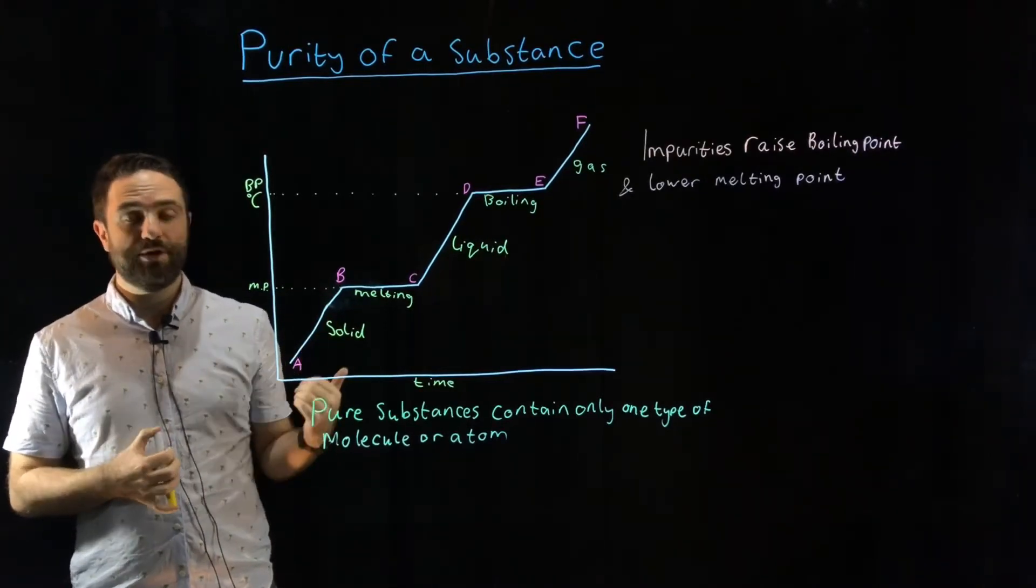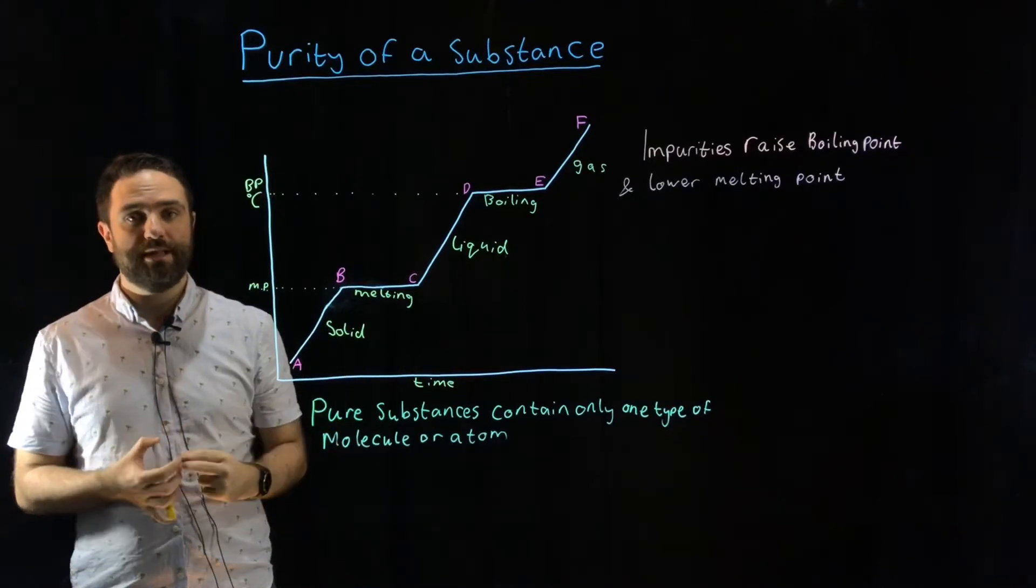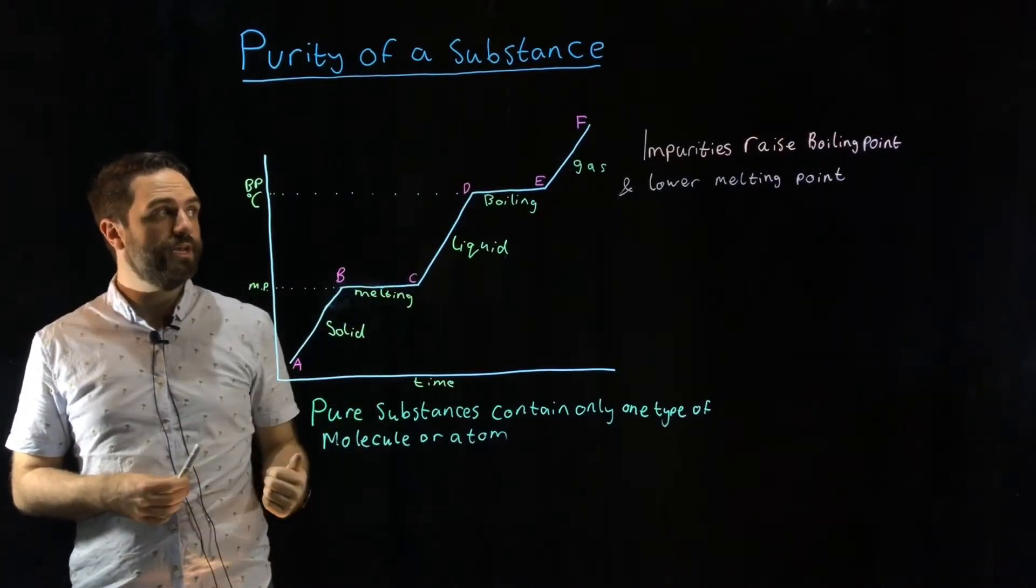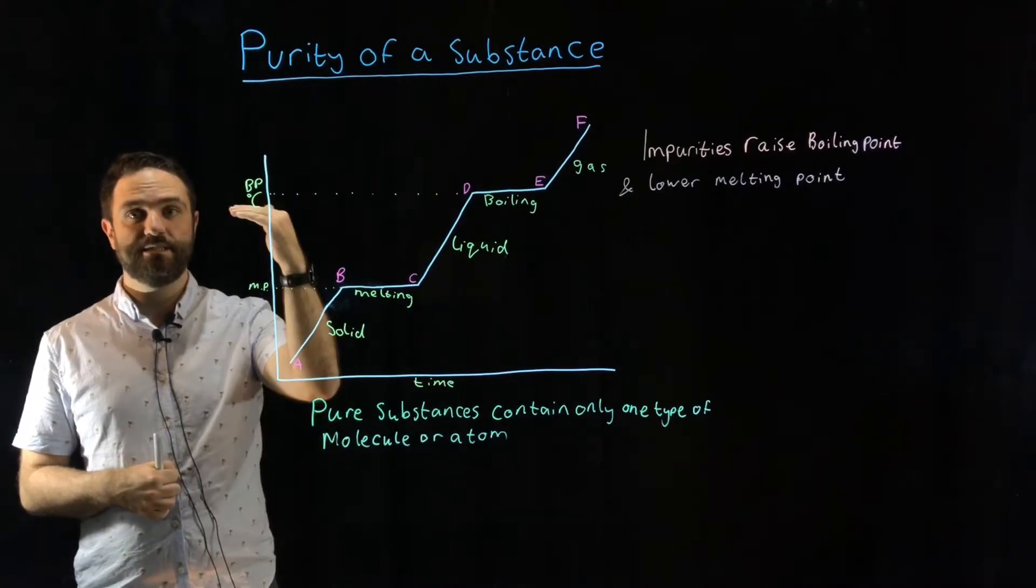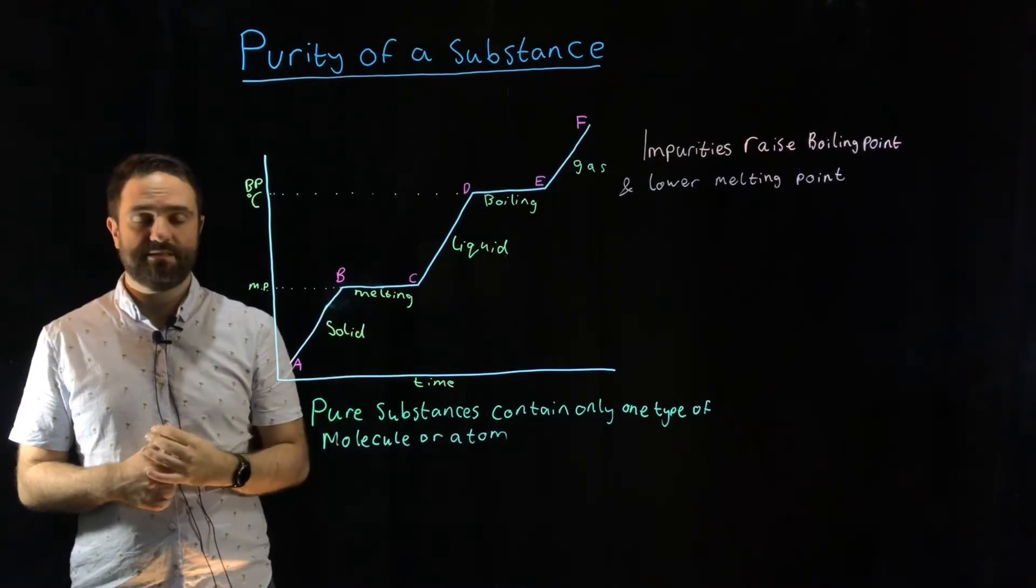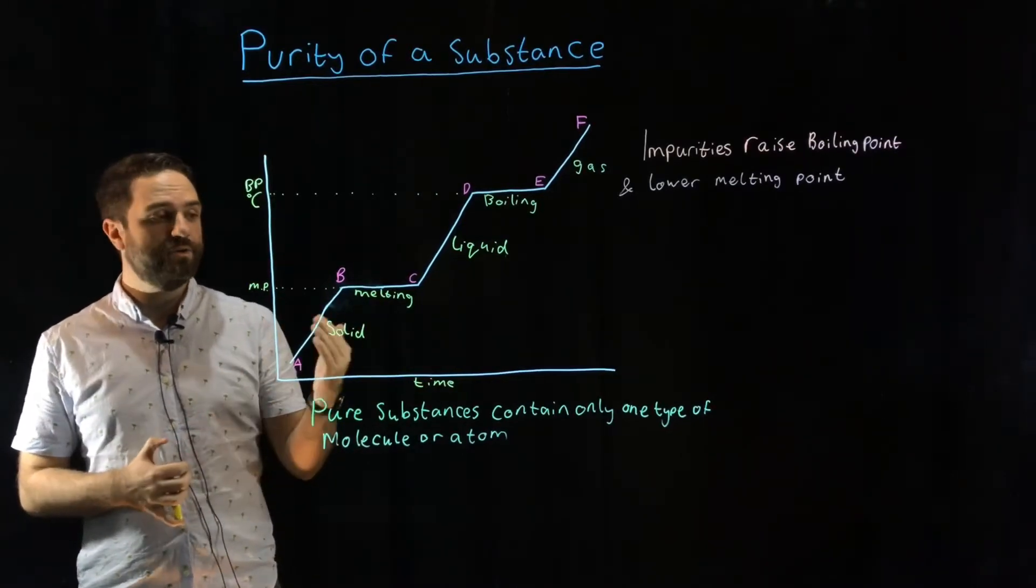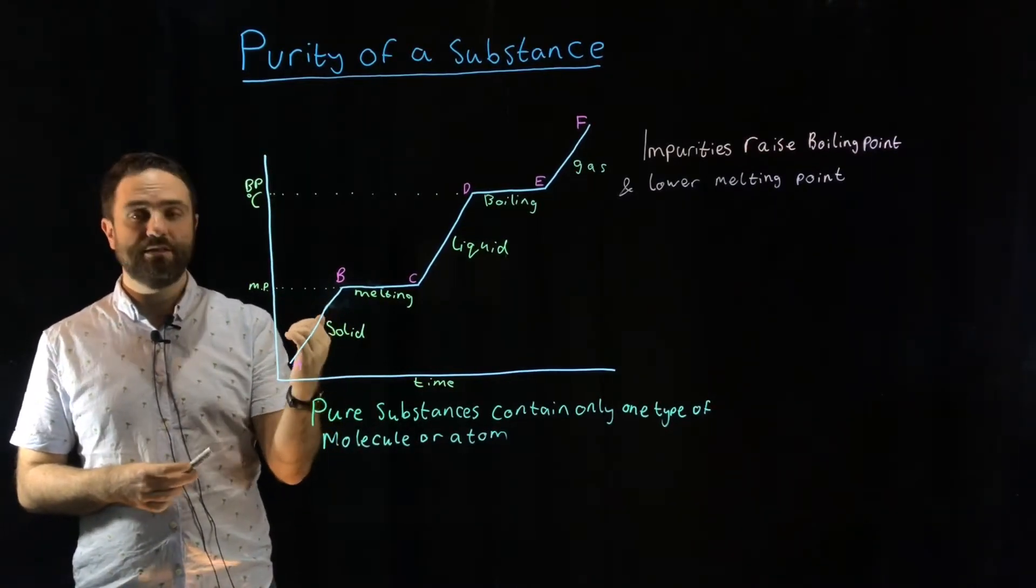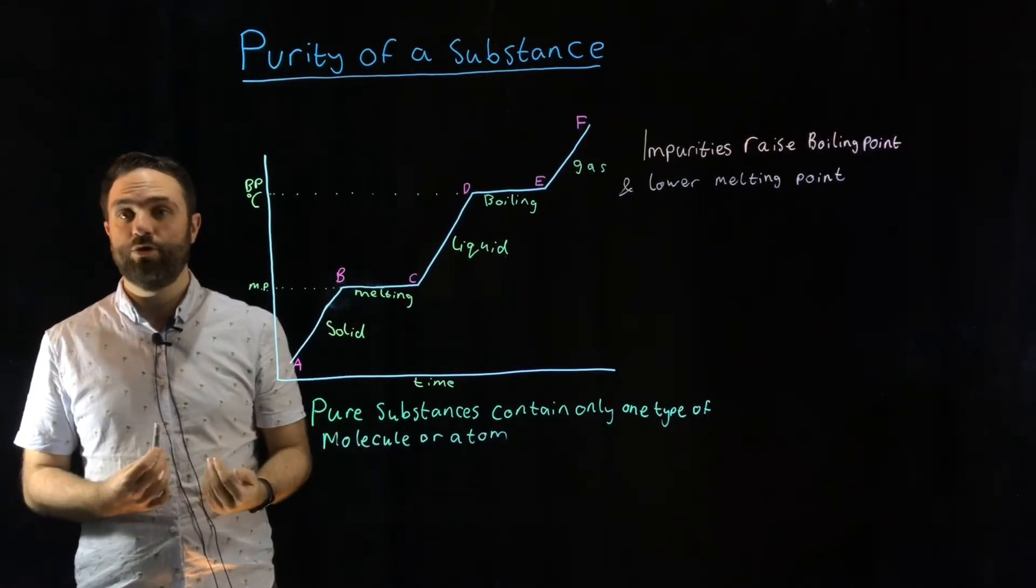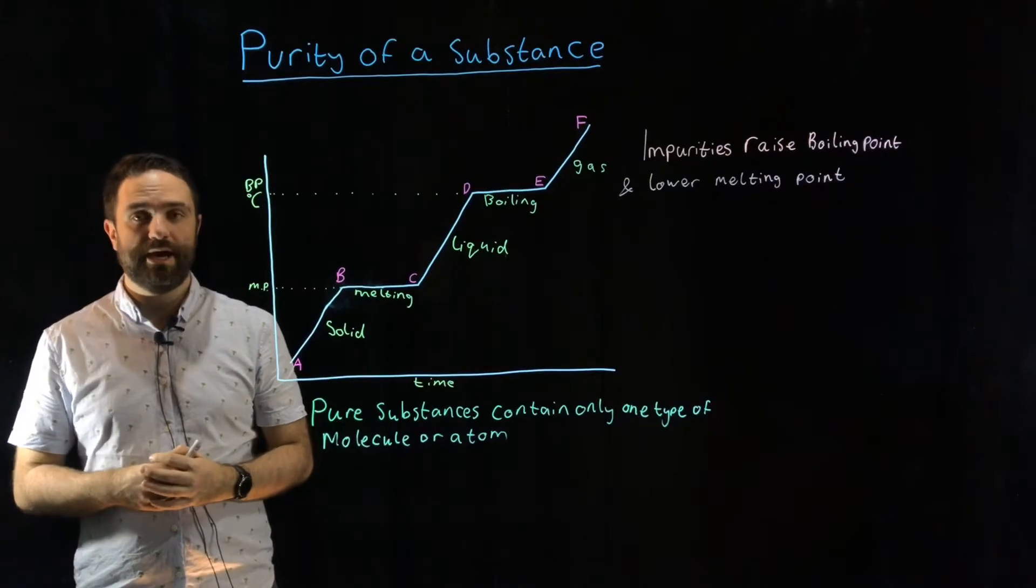And in fact, impurities change the boiling and melting point of a substance in predictable ways. If you have an impurity, the boiling point raises and the melting point lowers. So, if you have a sample of water and you find that it melts at negative two degrees Celsius and boils at 101 degrees Celsius, you know that there are impurities.